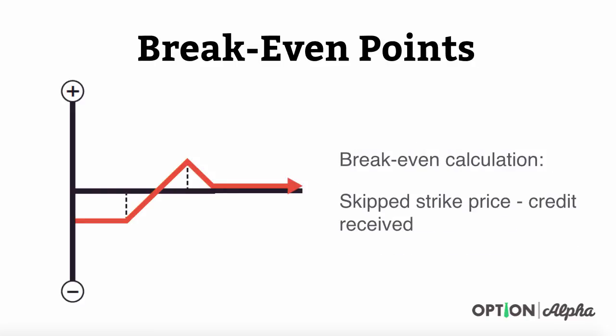As far as break-even points, what happens with these trades is that you take your skipped strike price less the credit received. Whatever that skipped strike price is that you jumped over in creating the strategy, we take that strike price and subtract out the credit received, and that gives us our new break-even point.